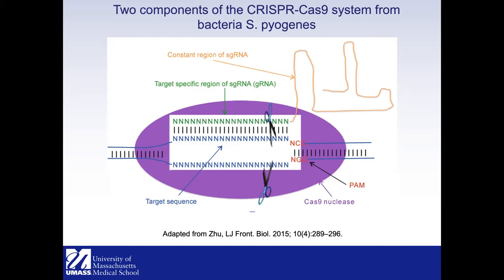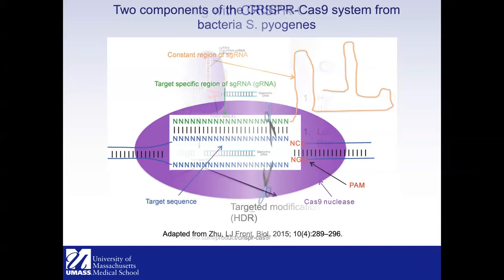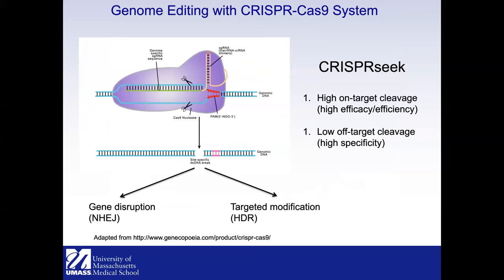The second component is the guide RNA, which has two sections: a constant region from the bacteria that forms a stem structure serving as scaffolding, and a target-specific green region that can be engineered to base-pair with the target sequence. The target sequence has two parts: the base-pairing region and the NGG PAM sequence recognized by Cas9. When both sides are bound, Cas9 makes a double-stranded break.